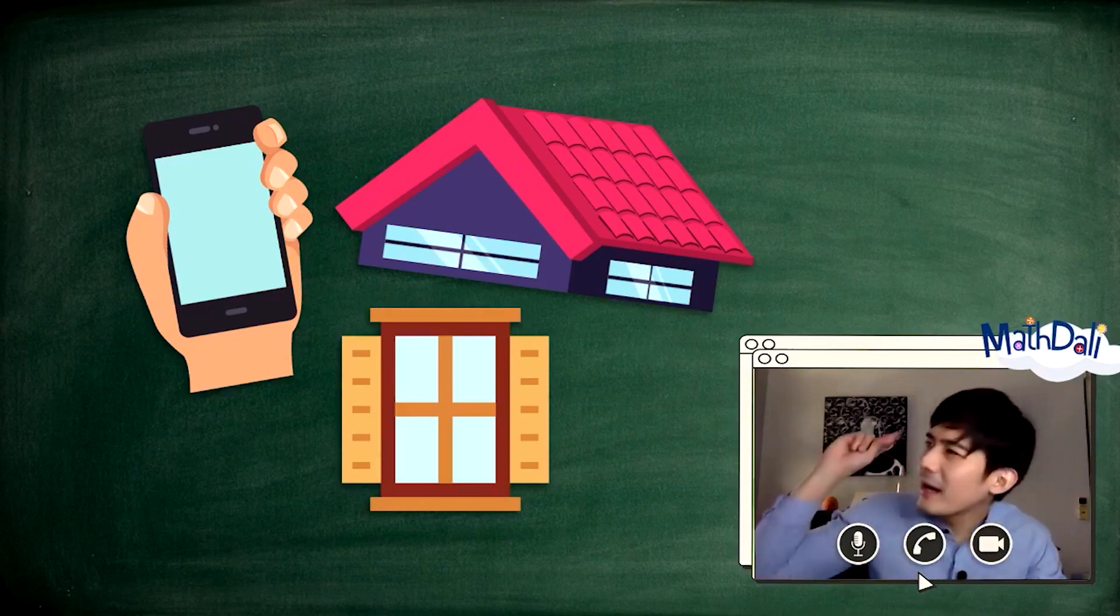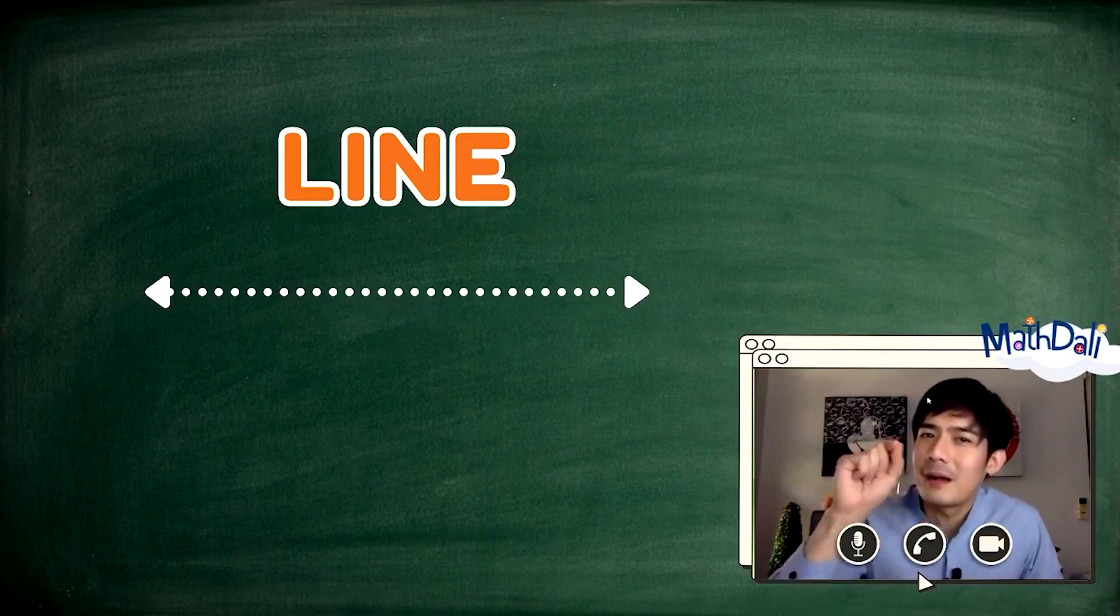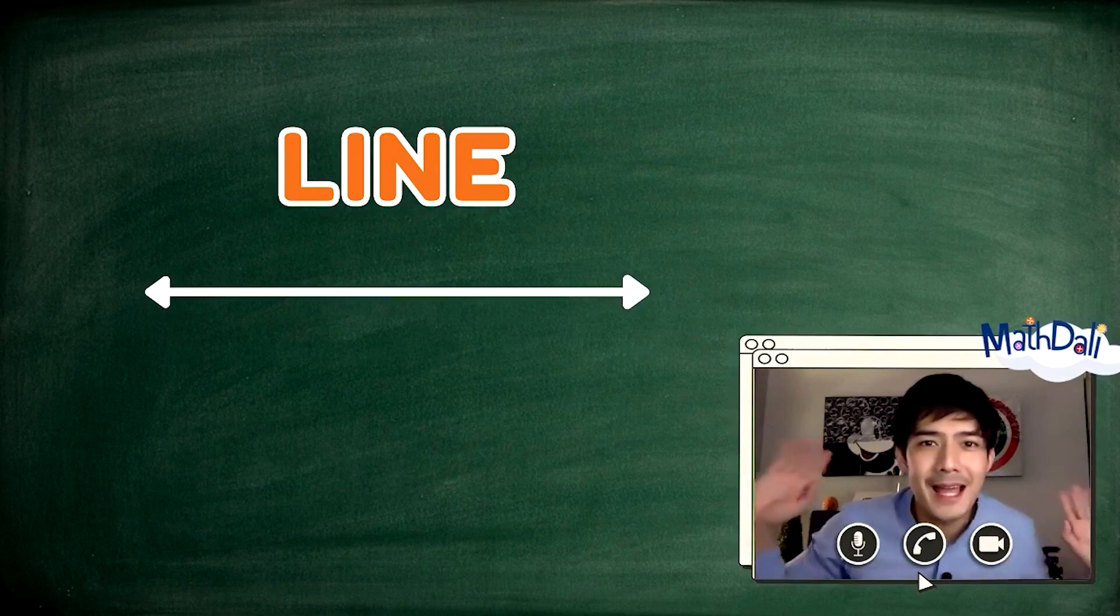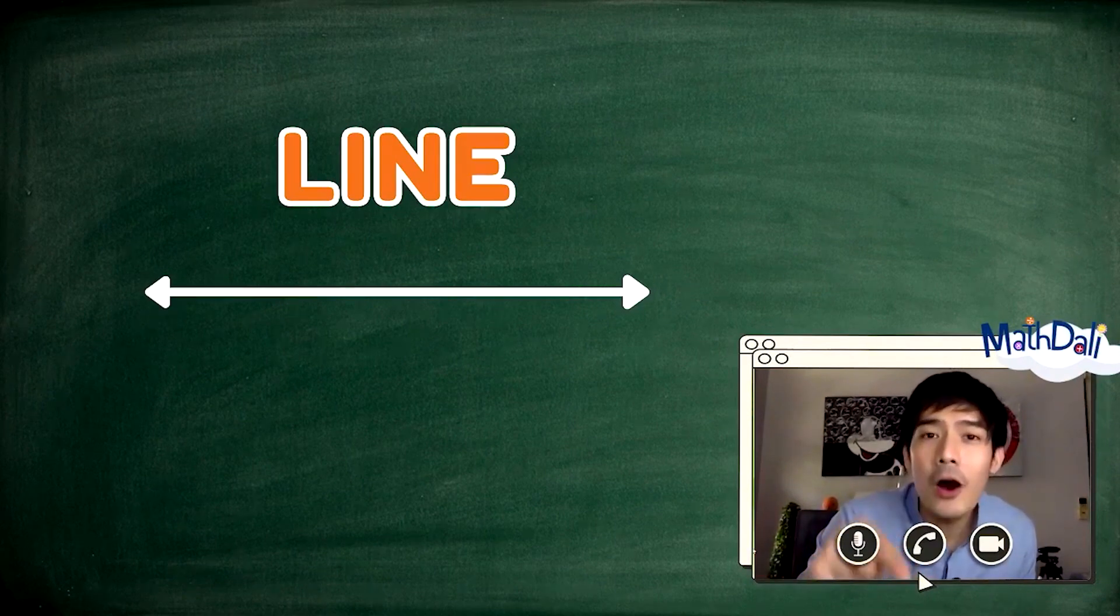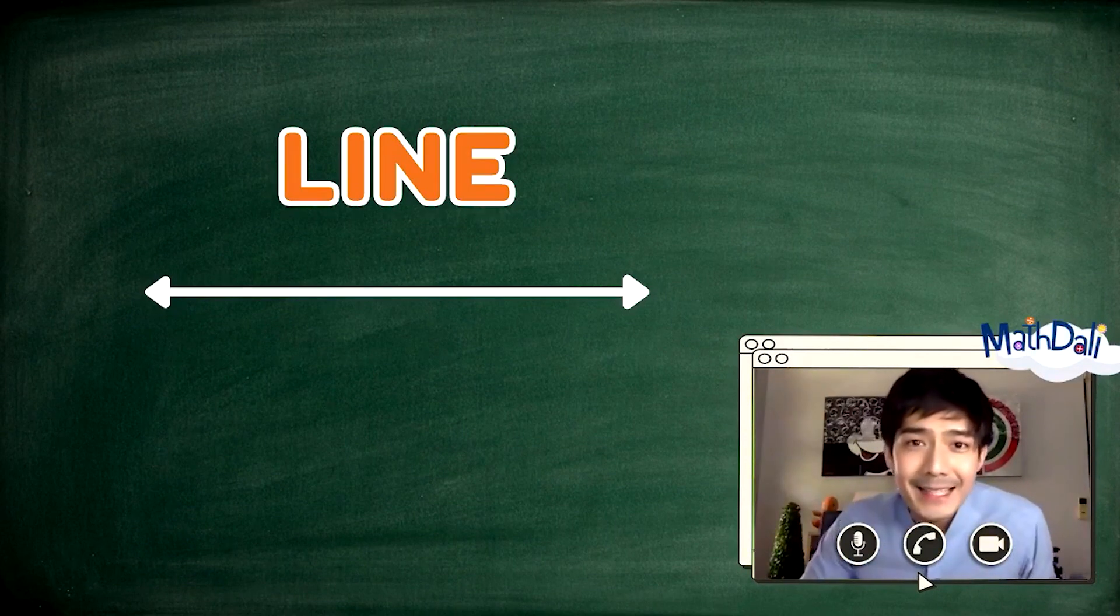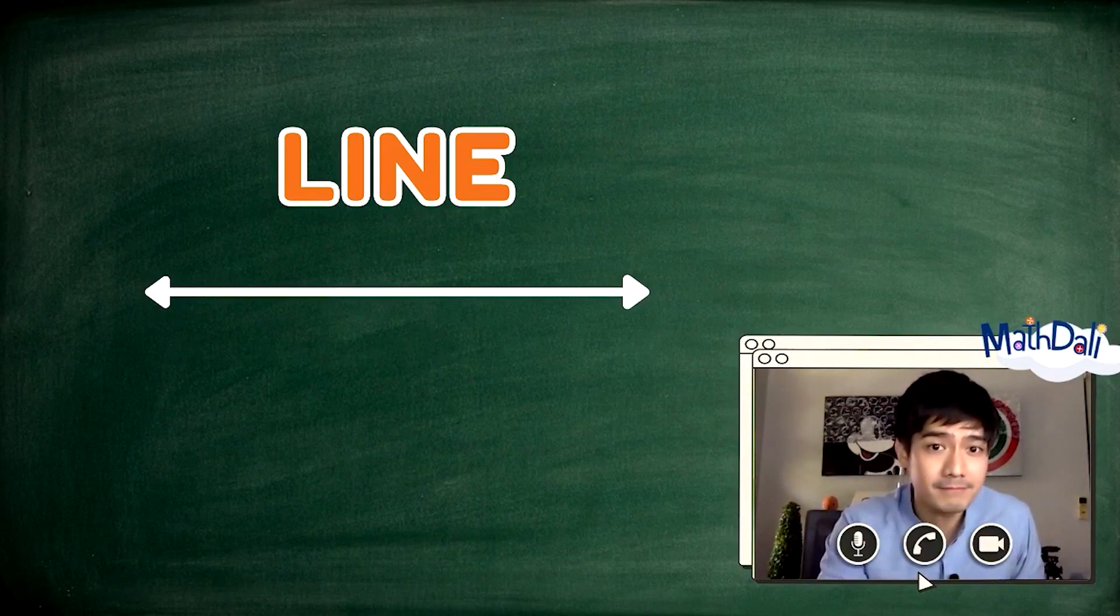Balikan nga natin, ano ba ang line? Kung titignan nyo mabuti ang line, infinite number of points yan na magkakabikit papunta sa direction na endless. Pag sinabi mong line, forever yan. Ang line naman ay nage-extend sa opposite direction and can go endlessly. Walang katakusan sa line may forever. Kaya naman, ginagamitan ito ng arrowhead sa magkabilang dulo.